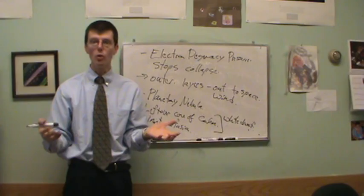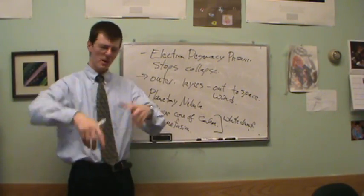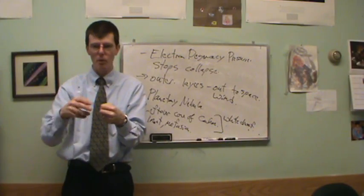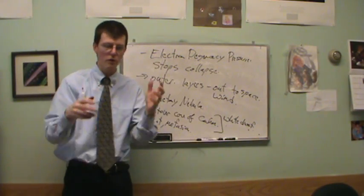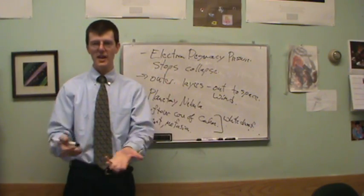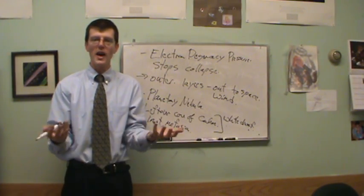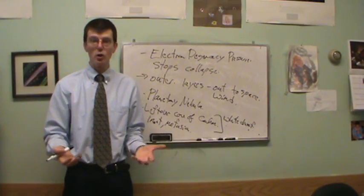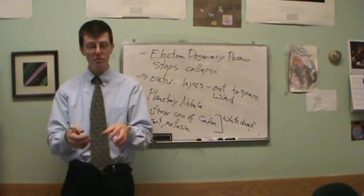And so then they sit there and then they cool for very, very long periods of time. Sometimes you can have interesting things if there's a binary system and this can throw stuff on top of the white dwarf and you can get flares up and nova and stuff like that. But for most of them, that's the end of the line. It's this leftover ember of carbon and that's the, and then it just sits there and cools basically forever.